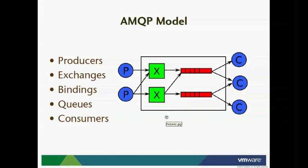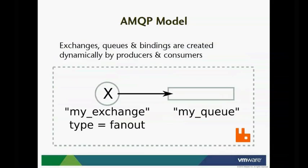This model is general enough to be able to express all of the patterns we've looked at. I'm going to go into a little more detail about different kinds of exchanges and the different routing topologies you can express with bindings.